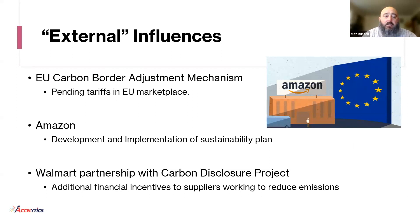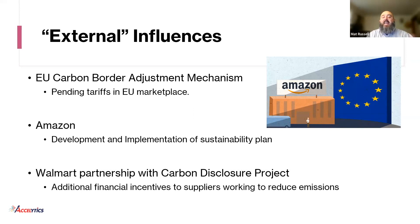Some of these external influences: the EU carbon border adjustment mechanisms are tariffs based on your phase three emissions scheduled to start in the EU beginning in 2050. Amazon is in the process of developing and implementing a sustainability plan with the goal of being carbon neutral by 2030 — so if you feed into them, they're going to be coming after you for your supply chain emissions data. And Walmart, in partnership with the Carbon Disclosure Project, is actually providing financial incentives to their suppliers right now who are working to reduce emissions — so there may be money available to begin this tracking process.